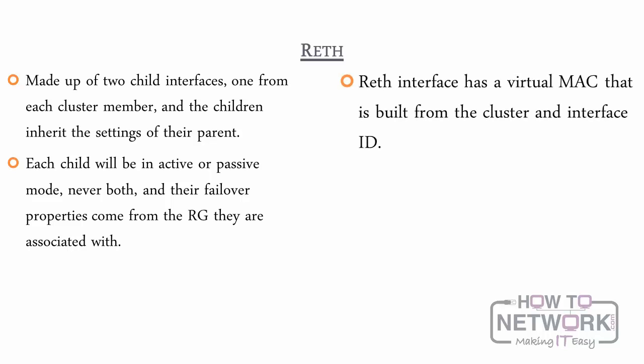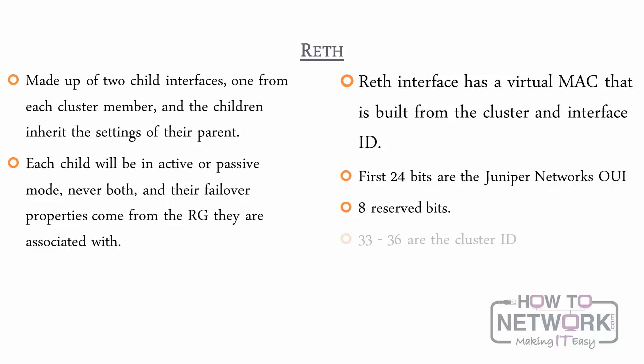The Wreath interface has a virtual MAC or VMAC built into the cluster and interface ID. The first 24 bits are the Juniper Networks OUI, followed by 8 reserve bits. The last 16 bits can be affected by users: bits 33 and 36 are cluster ID, and the last 8 bits are the Wreath interface number. This MAC calculation scheme ensures that multiple clusters can live on the same network without interfering with each other.